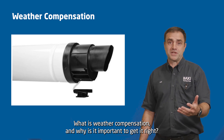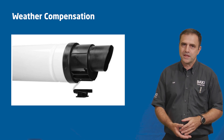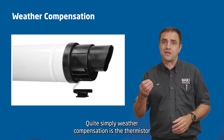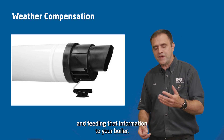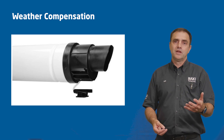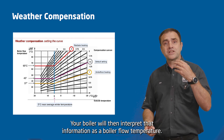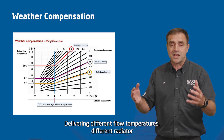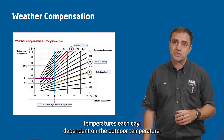So, what is weather compensation, and why is it important to get it right? Quite simply, weather compensation is a thermistor that sits outside the property, measuring the outdoor temperature, and feeding that information to your boiler. Your boiler will then interpret that information as a boiler flow temperature, delivering different flow temperatures, different radiator temperatures each day, dependent on the outdoor temperature.